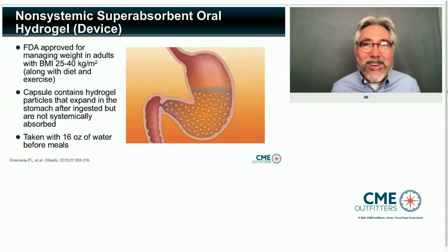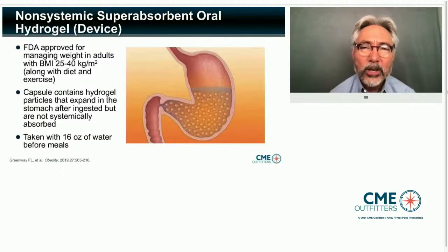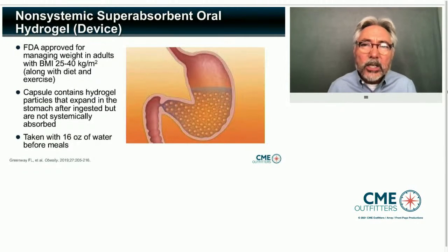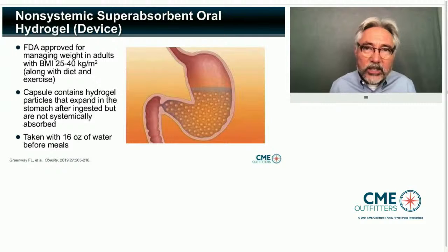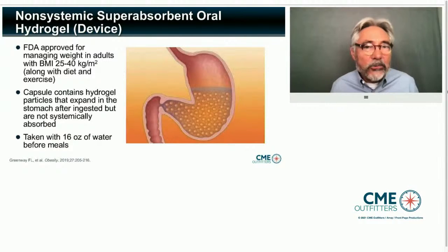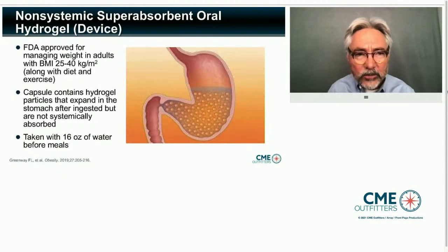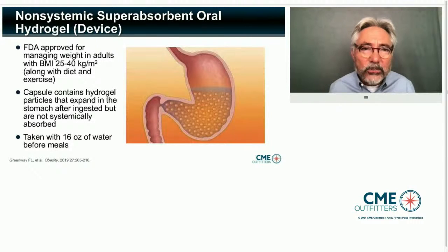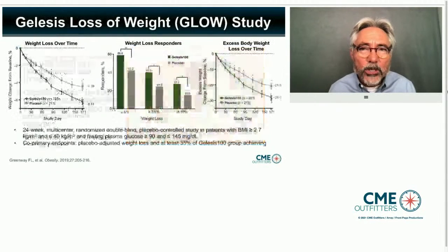Now there are non-systemic super-absorbent hydrogel devices — small particles made from cellulose, FDA-classified as GRAS (generally regarded as safe), cross-linked with citric acid. When you add water, they expand. The patient has to drink 16 ounces of water with it at lunch and dinner, and the substance expands in the GI tract giving a feeling of fullness. Food technology in this area is advancing at an incredible rate.